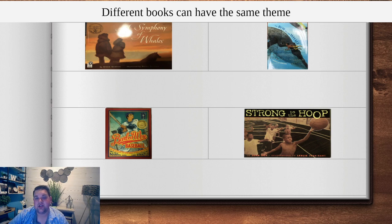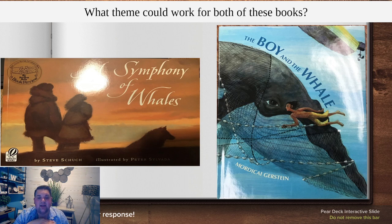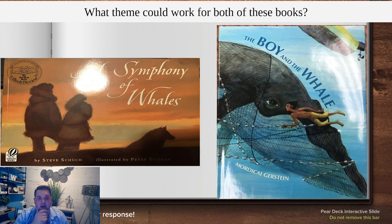Remember, themes are one or two words that really describe what the whole book's about. Symphony of Whales is about a girl who lives in a very cold place with big sheets of ice around her. A bunch of whales get stuck inside an area where there's really thick ice and they're trapped. Her family and the people she lives with contact an icebreaker to come, and they have a really challenging time getting the whales out, but they eventually do.